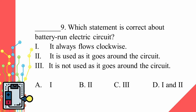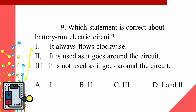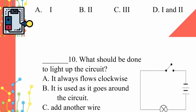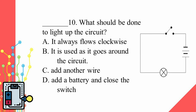Number 9: Which statement is correct about a battery-run electric circuit? I. It always flows clockwise. II. It is used as it goes around the circuit. III. It is not used as it goes around the circuit. A. 1 only. B. 2 only. C. 3 only. D. 1 and 2. Number 10: What should be done to light up the circuit? A. It always flows clockwise. B. It is used as it goes around the circuit. C. Add another wire. D. Add a battery and close the switch.